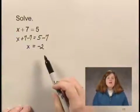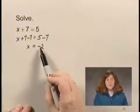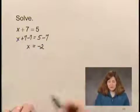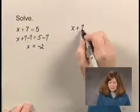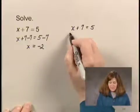Now, in order to determine if that is the solution, we substitute negative 2 for x in the original equation. That is, x plus 7 equals 5.